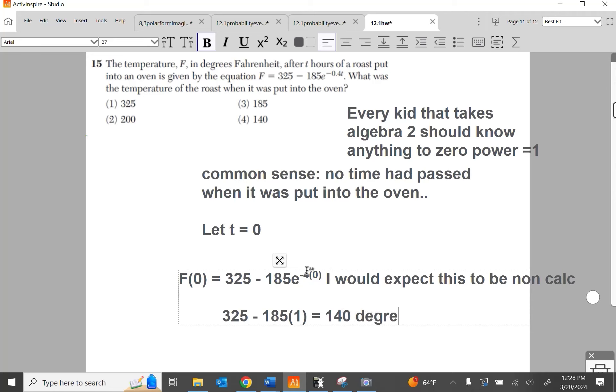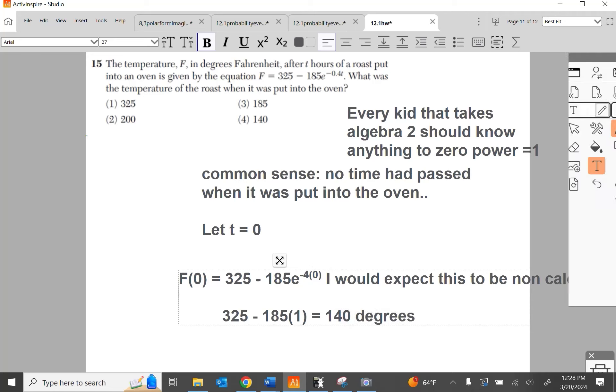Anything. So I have 325 minus 185, a negative 4 times 0 is 0, e to the 0 is a 1. This becomes 325 minus 185, which is what, 140 degrees? Bam. Choice four.